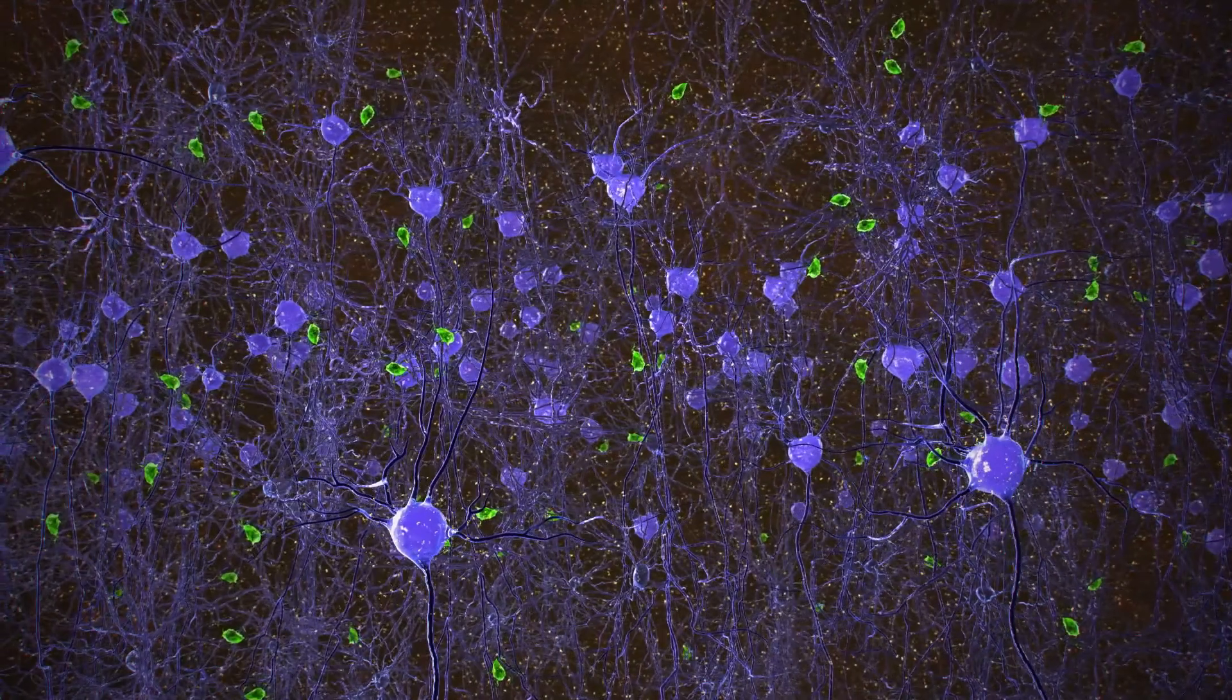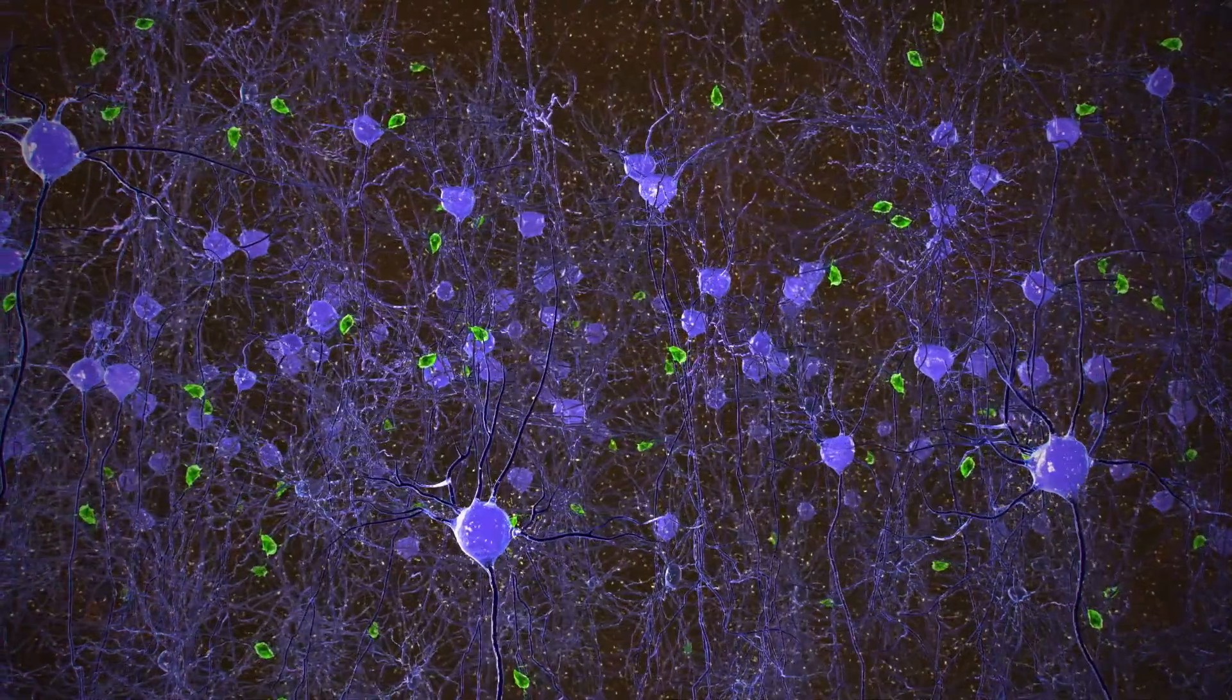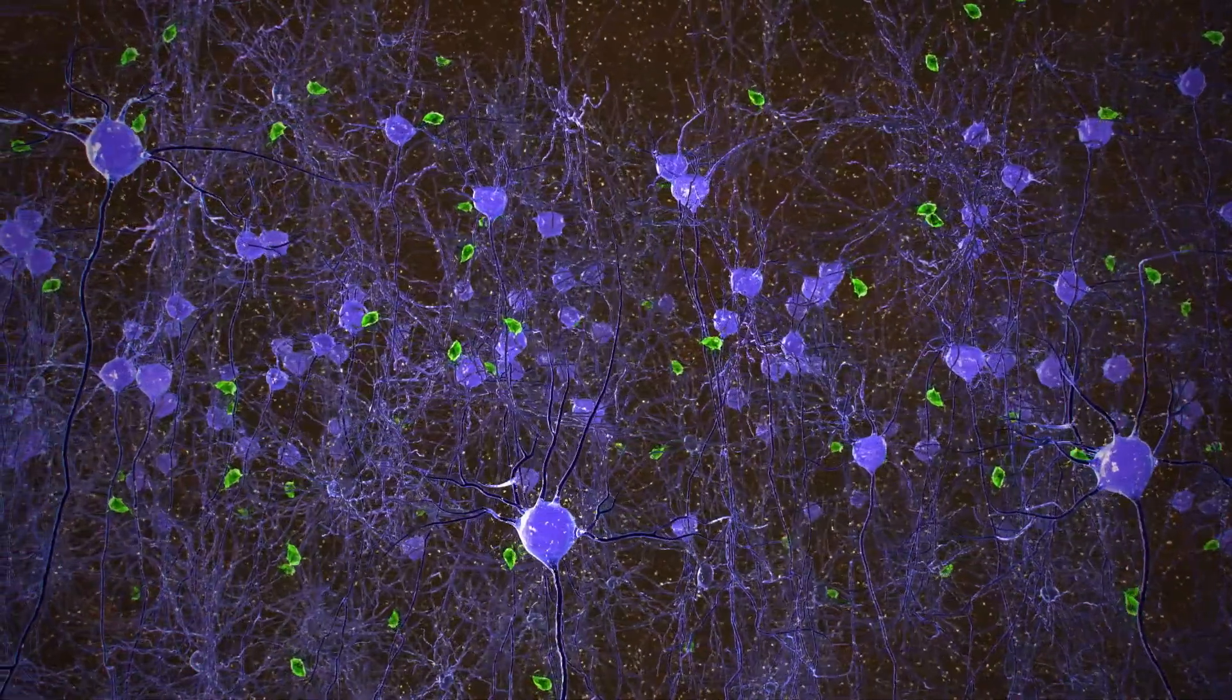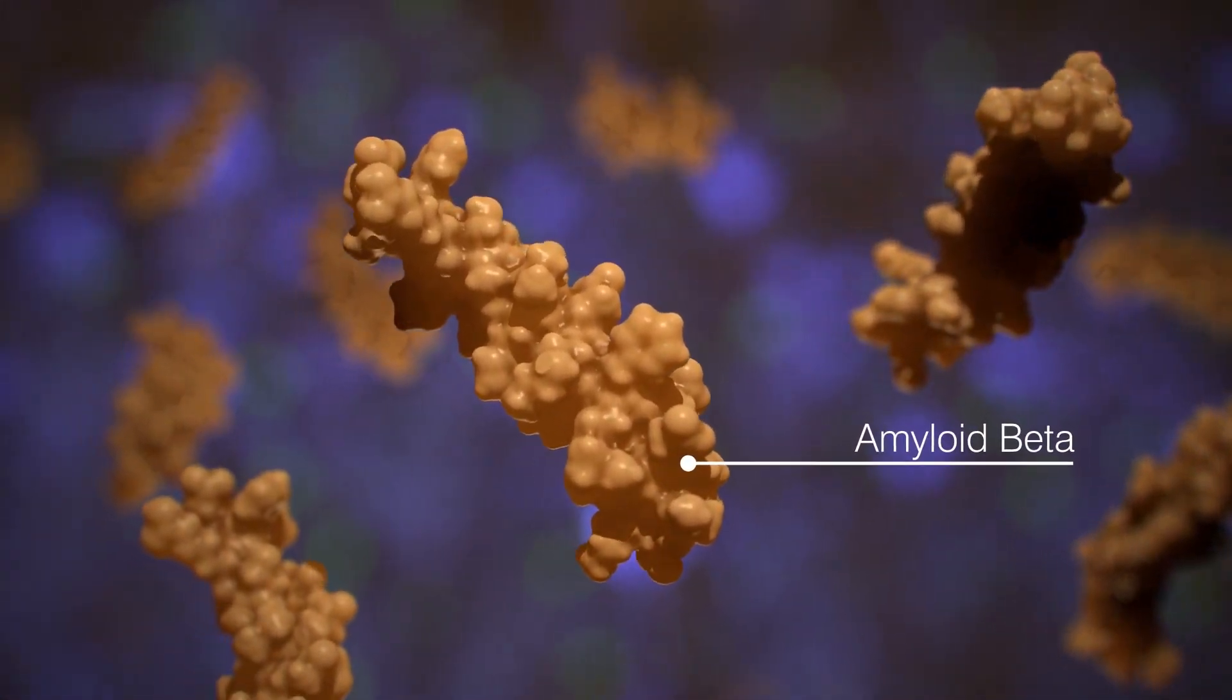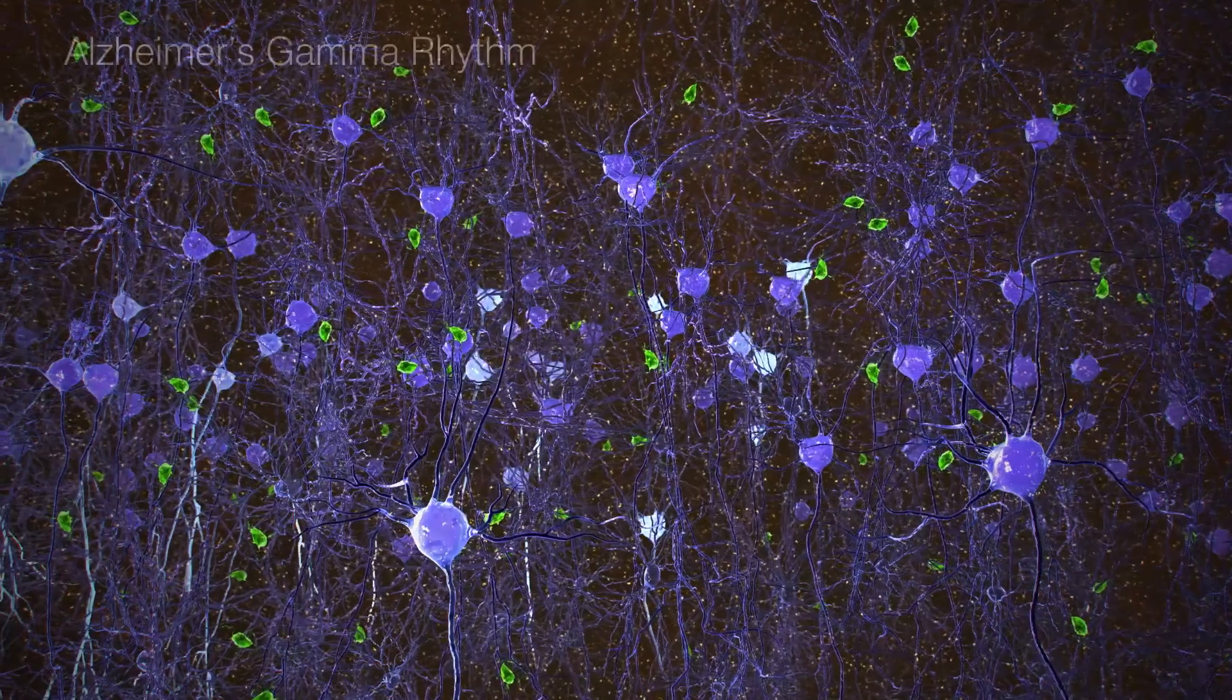Altered gamma rhythms in Alzheimer's disease are due in part to the toxic accumulation of a snipped protein called amyloid beta, resulting in fewer neurons firing in synchrony.